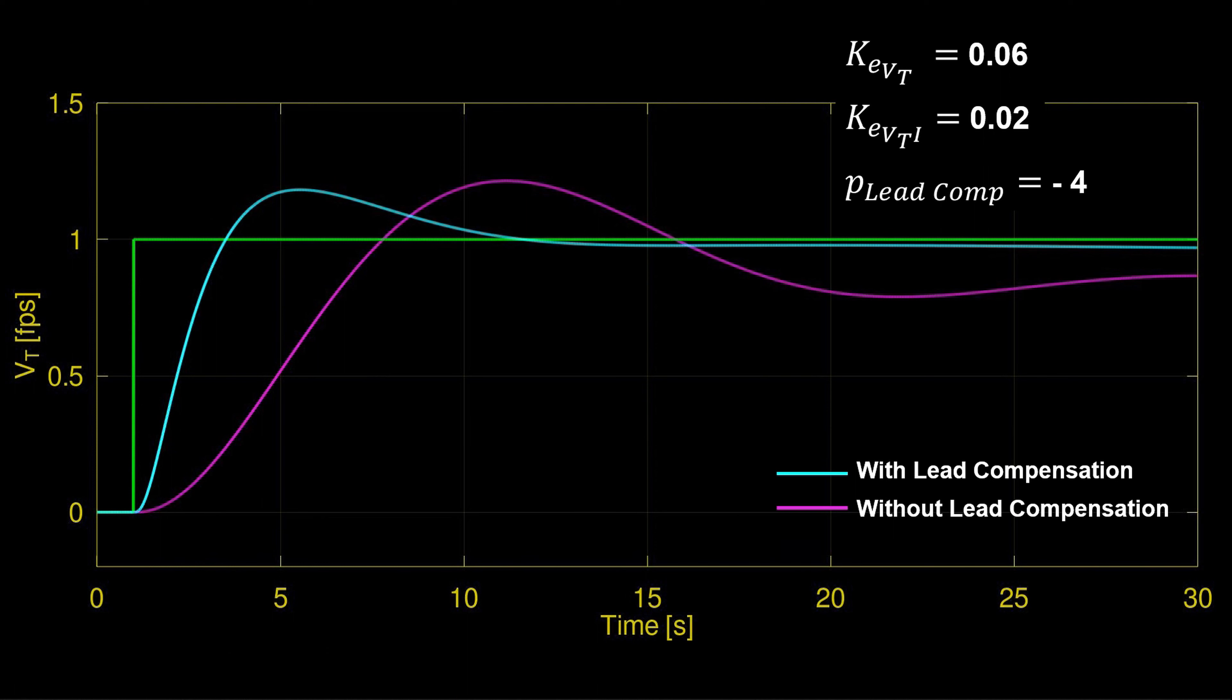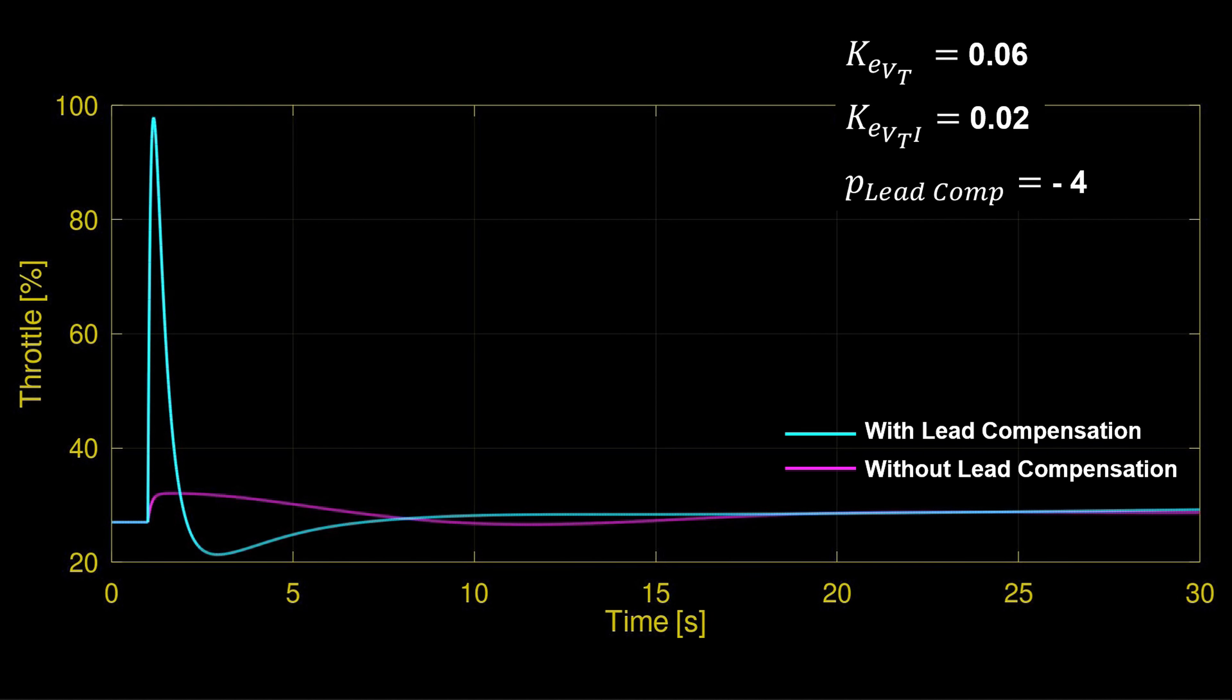And the result is significant. By inspection, a 1.5 second rise time versus a 5 second rise time. Slightly less overshoot. Greater damping. And steady state tracking of the airspeed with small bias error. But this is not the whole story. When using a lead compensator, we must be concerned with the amount of control effort. Control saturation. There's no free lunch. To get this snappier step response, look at the dramatic spike in throttle momentarily near 100%. And this is only to track a 1 foot per second airspeed command. This won't do.